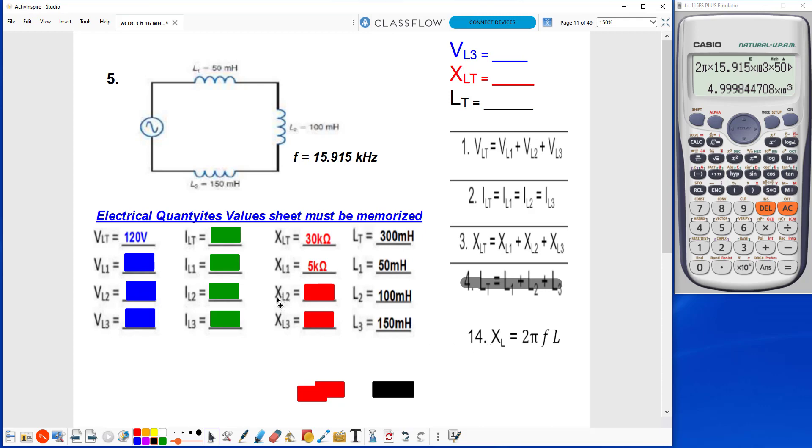Next, I'm going to find XL2, so I'm going to use L2. So I'll just scroll up here, change the 50 to 100 millihenries, giving me 10k ohms.